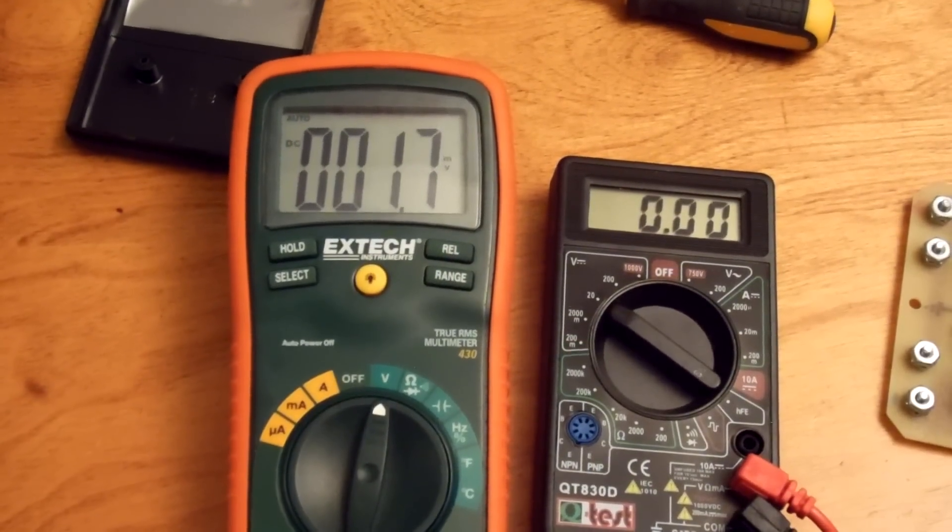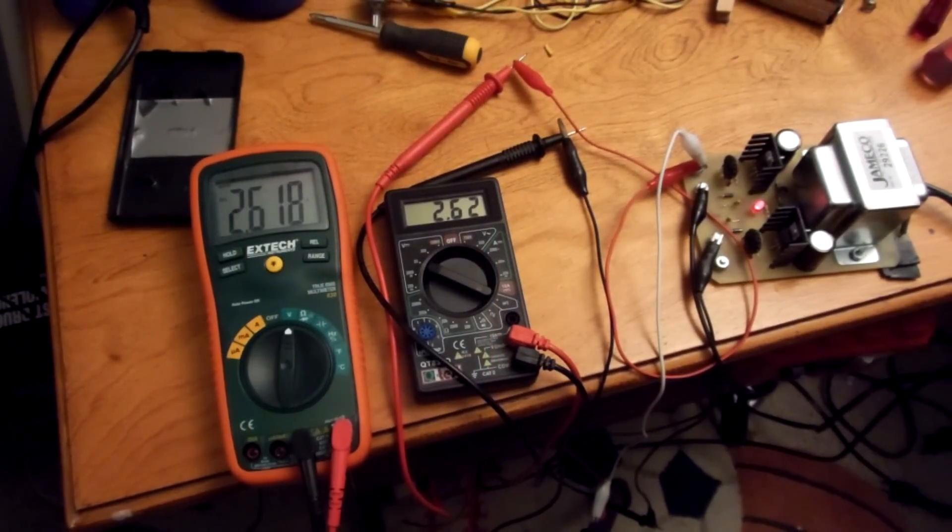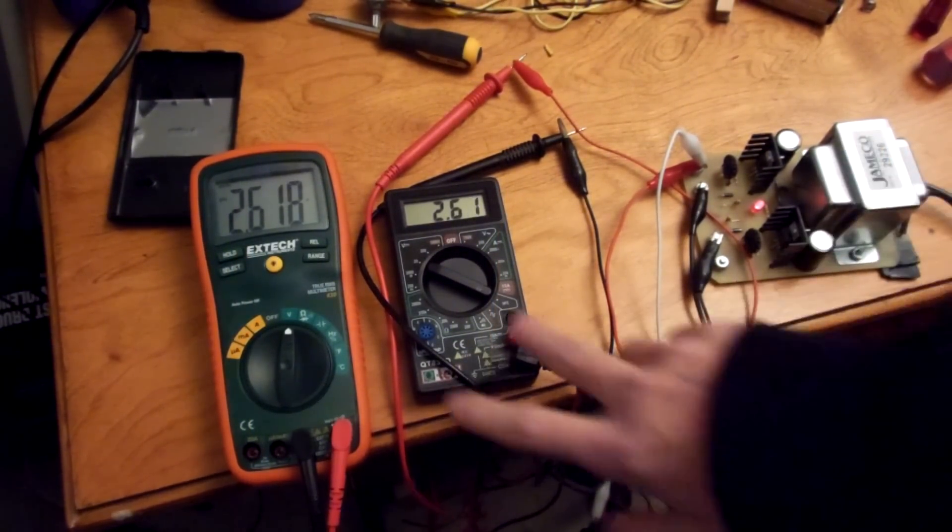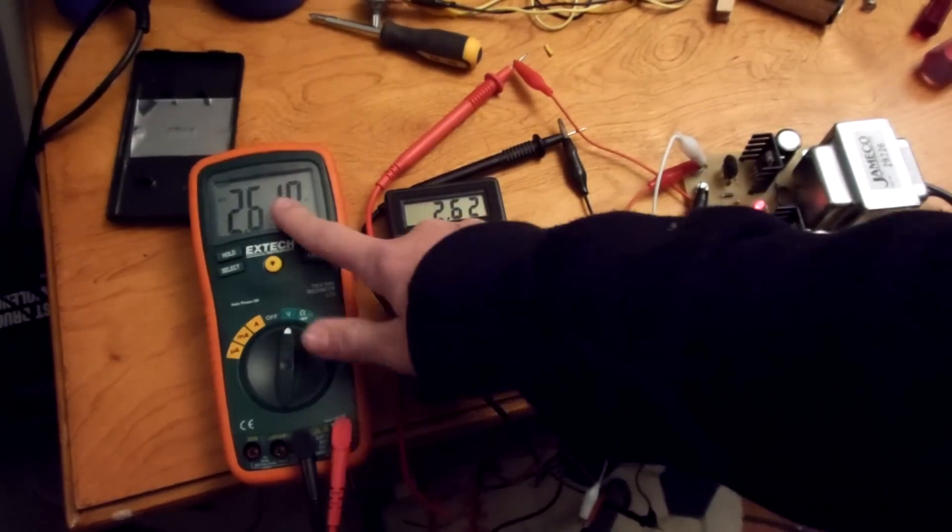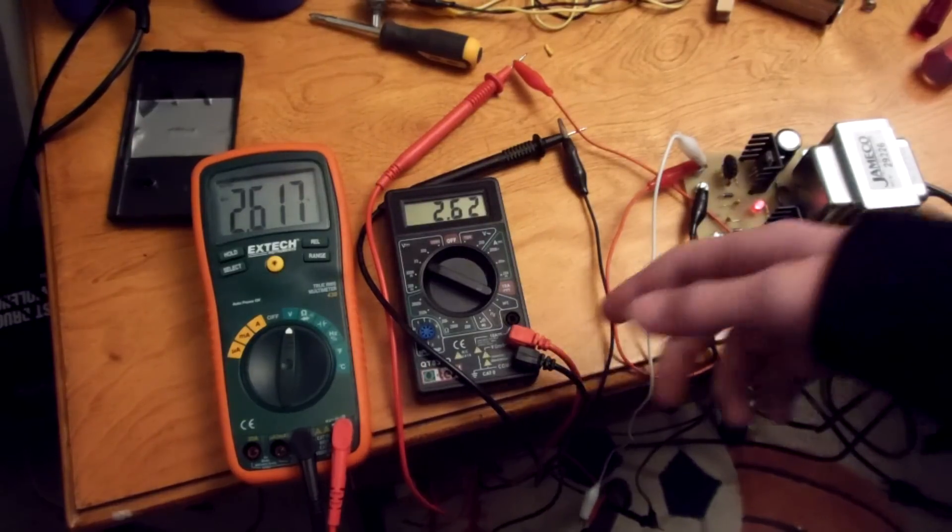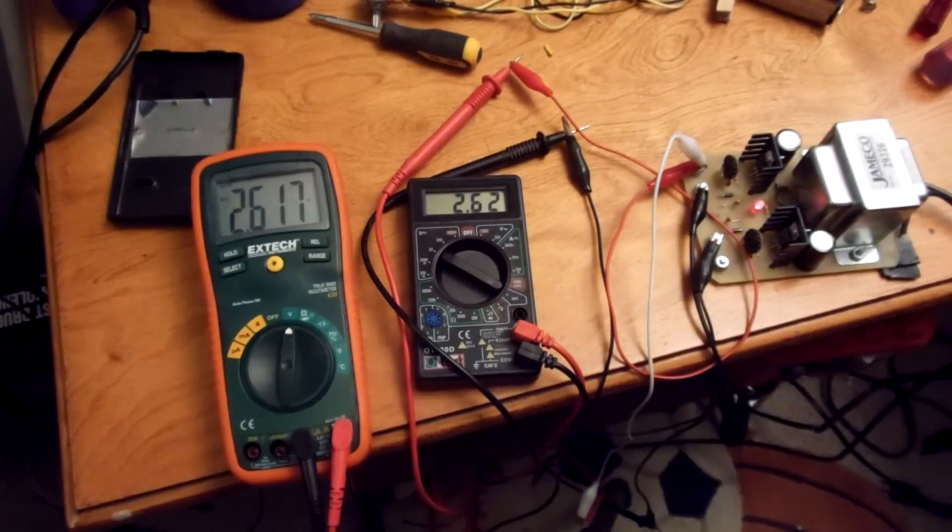Now that we have both set up, I'll show you my calibration setup. So you're looking at my setup. I have a DC power supply connected to the two multimeters via some alligator clips there. The Extech is set on DC auto-ranging, and the cheap free meter is on 20 volts DC.